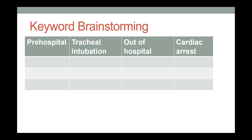Now it's time to start thinking about other ways to say these things. I need to think about synonyms, broader terms, narrower terms, and word variations — because the same word can be written a little differently. To a computer, searching pre-hospital as one word is different than searching pre-hospital with a hyphen. That hyphen makes it a different word. I also noticed that pre-hospital and out-of-hospital kind of mean the same thing, so I might combine that column and put out-of-hospital as a synonym.